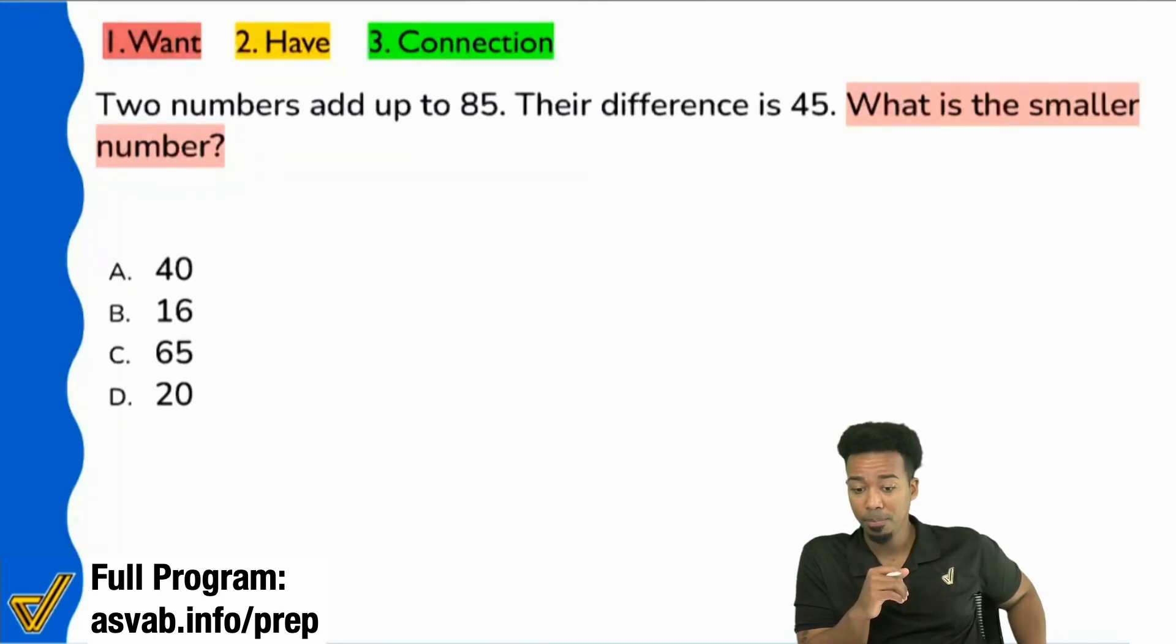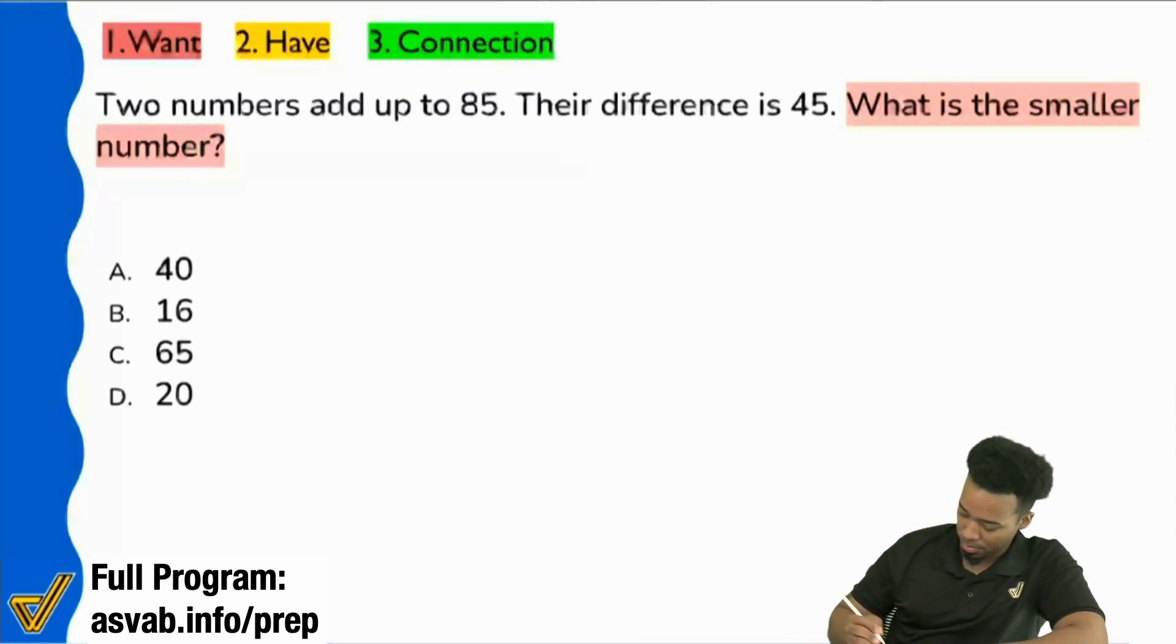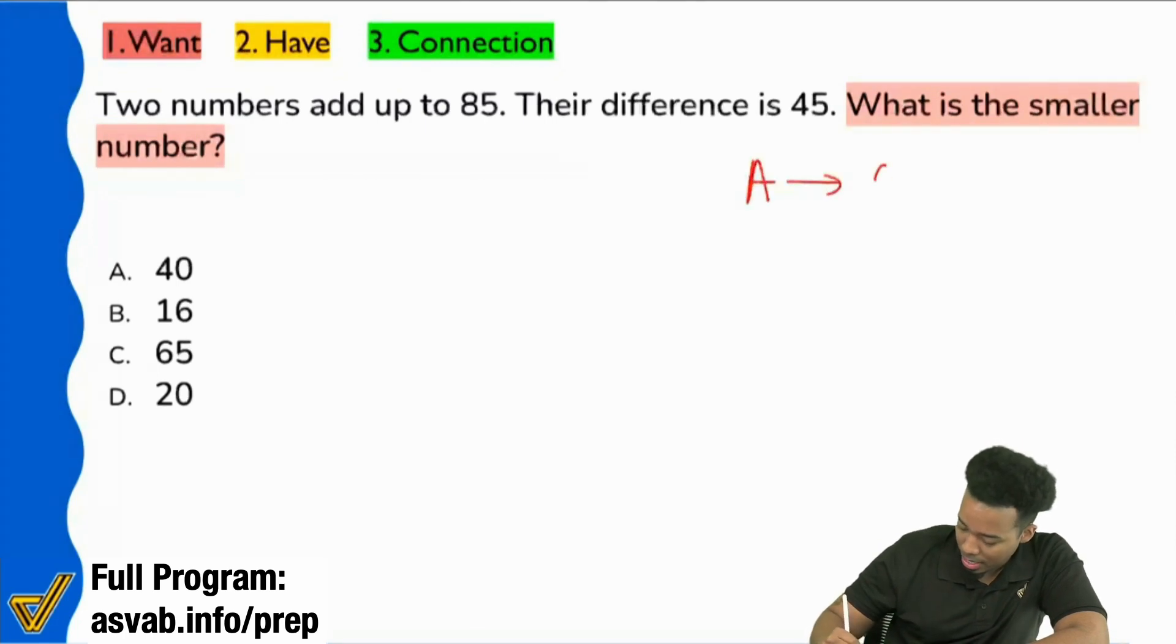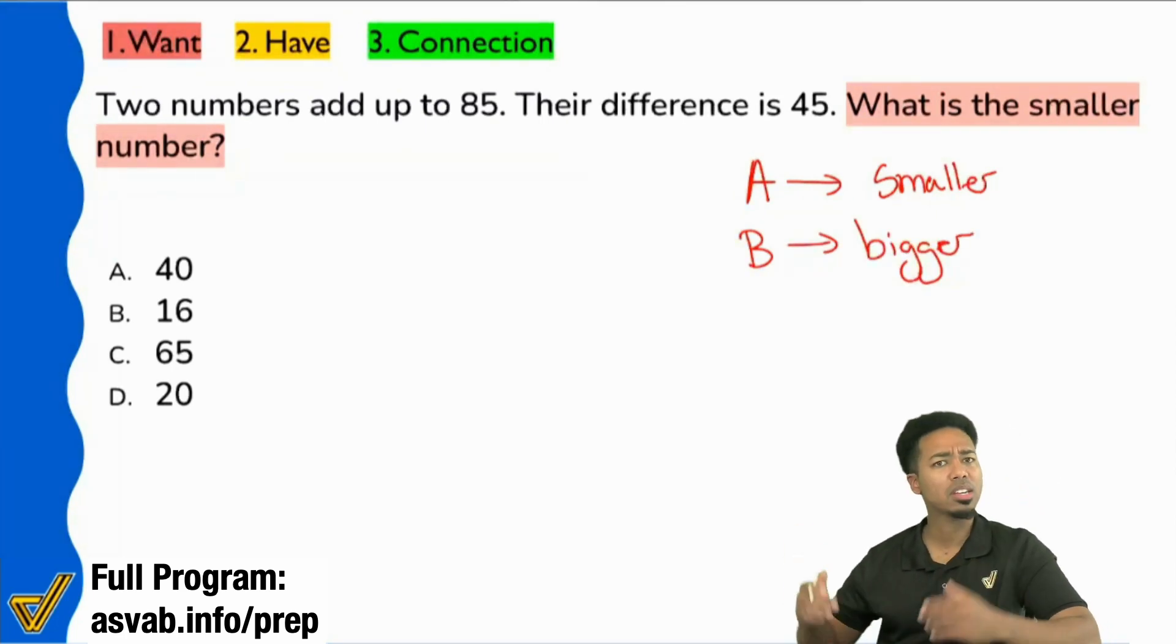I'm going to say that A is the smaller number and I'll say that B is the bigger. This is what makes a huge difference - you saying what you want. So let's set it up.